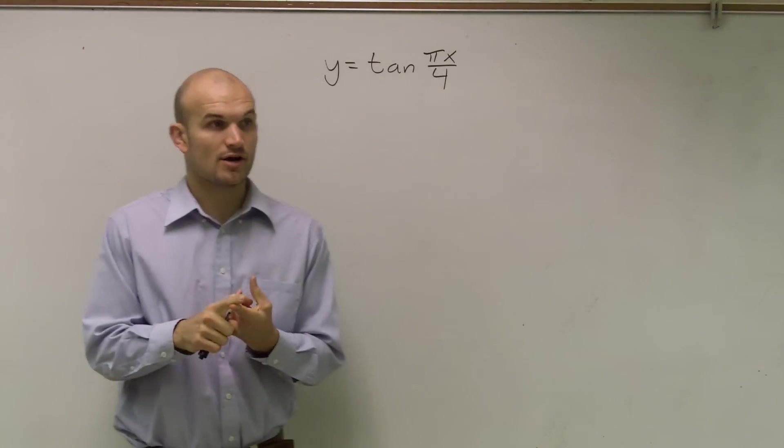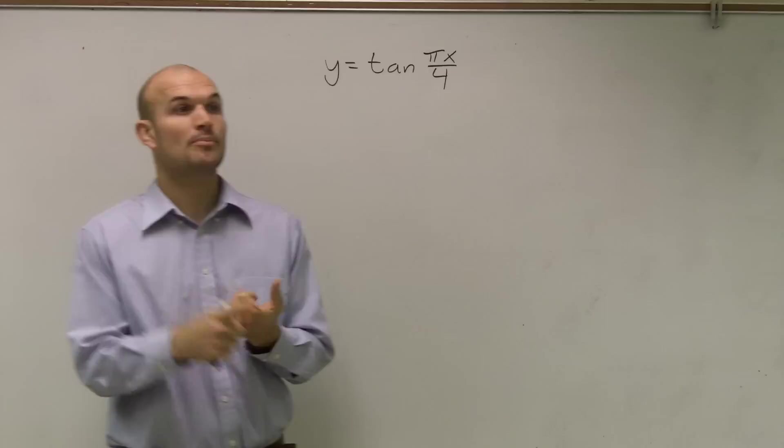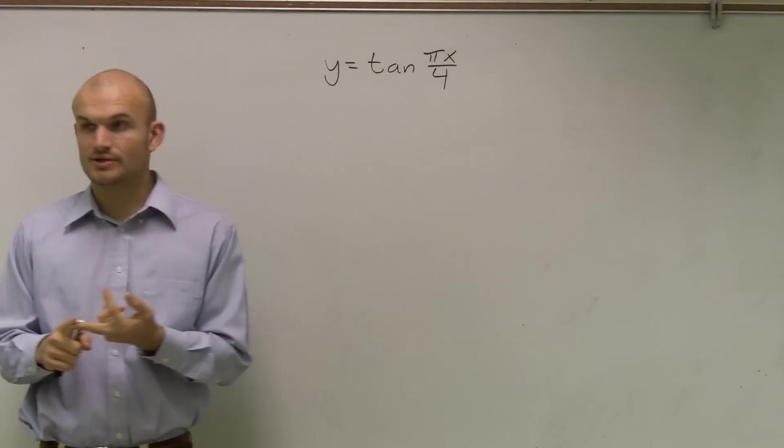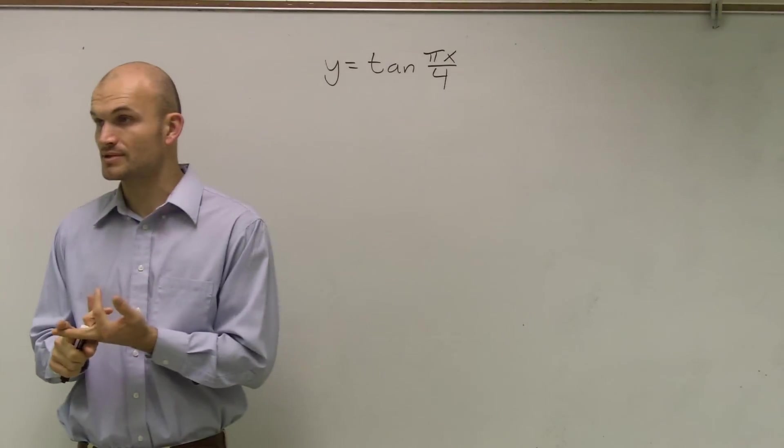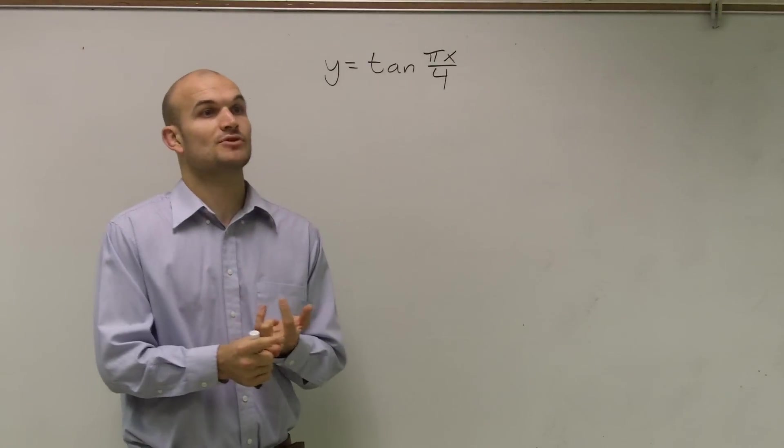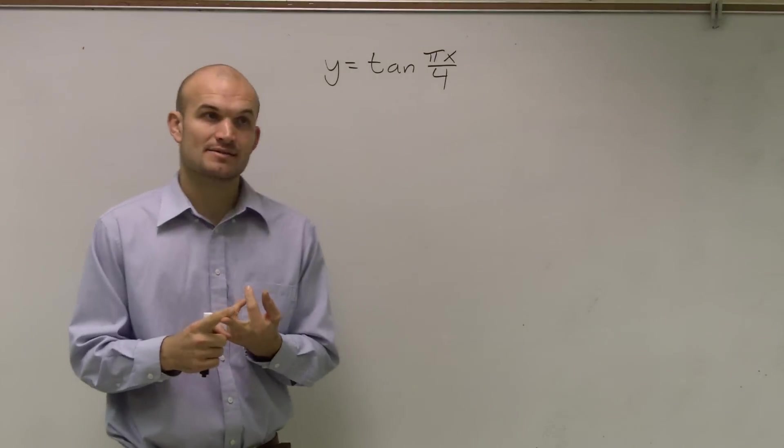However, we are going to have to figure out what our period is. And instead of a period being 2π, our period is now π. And we're also going to have a tangent graph, just like a cosecant graph, that's going to have asymptotes. So we need to remember what our original asymptotes are, and then from those original asymptotes, we need to figure out what our new asymptotes are.